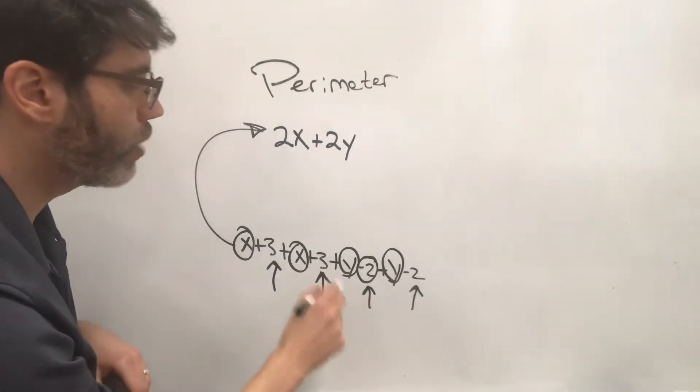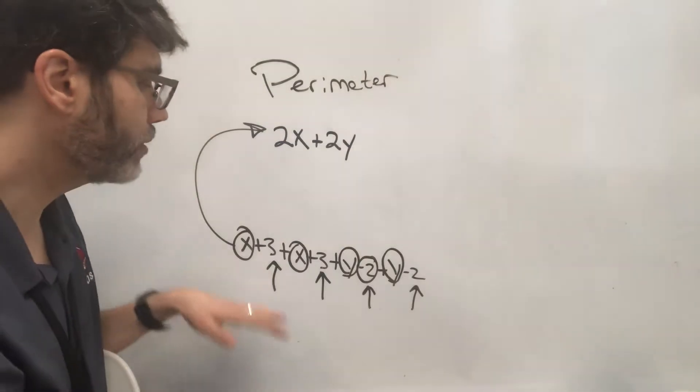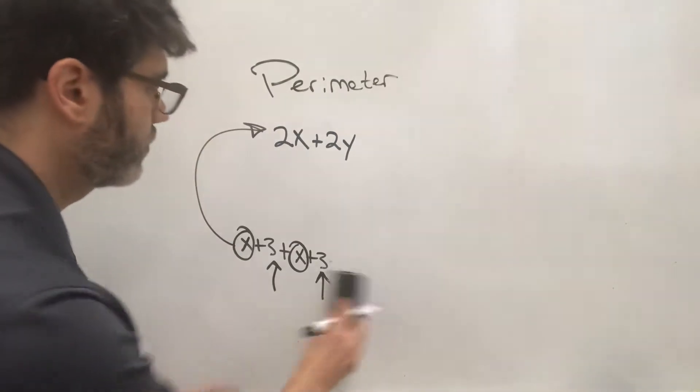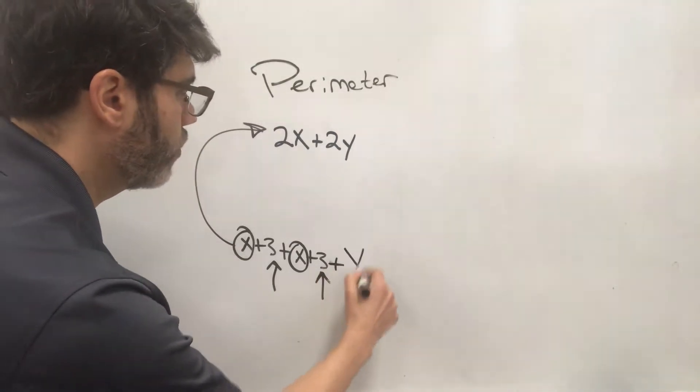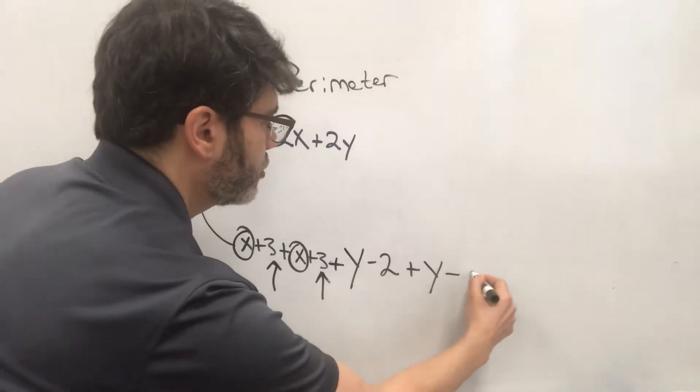If you don't know why these are considered to be negative 2s, whenever we start out, what I suggest that you do is, so this was y minus 2 plus y minus 2.